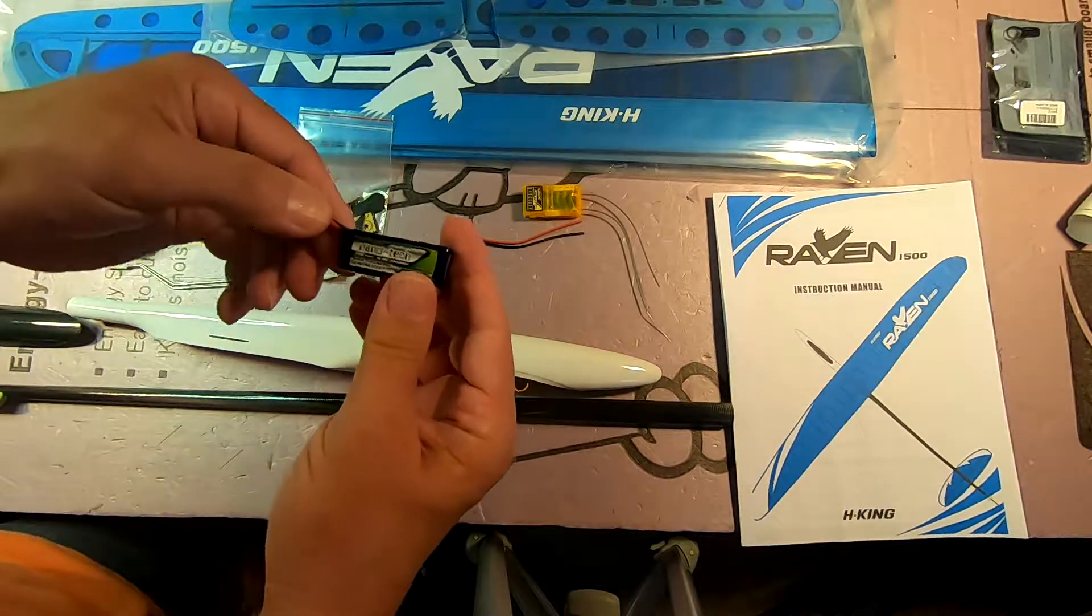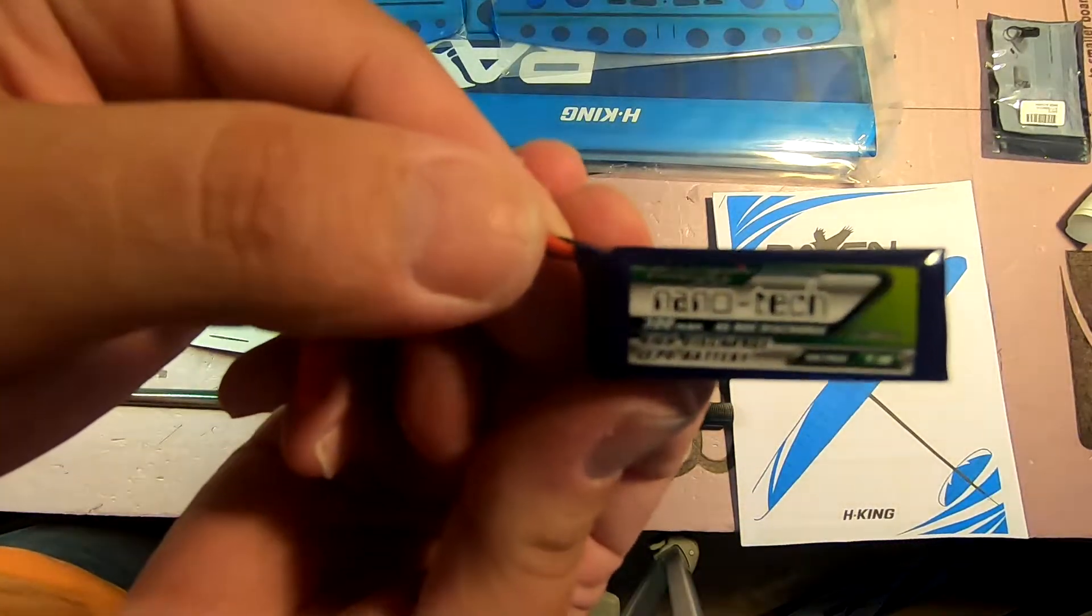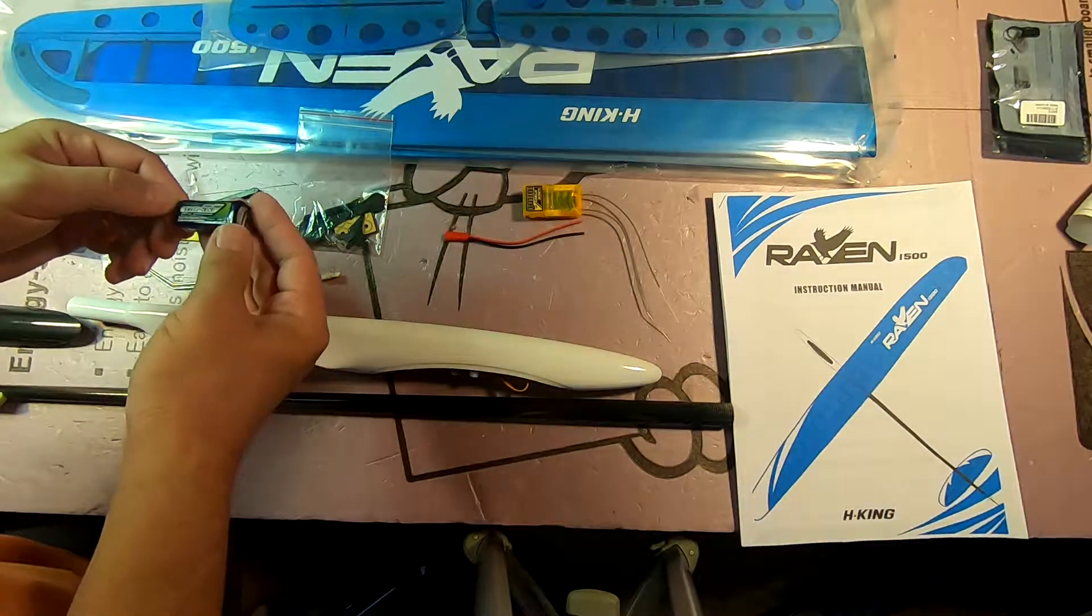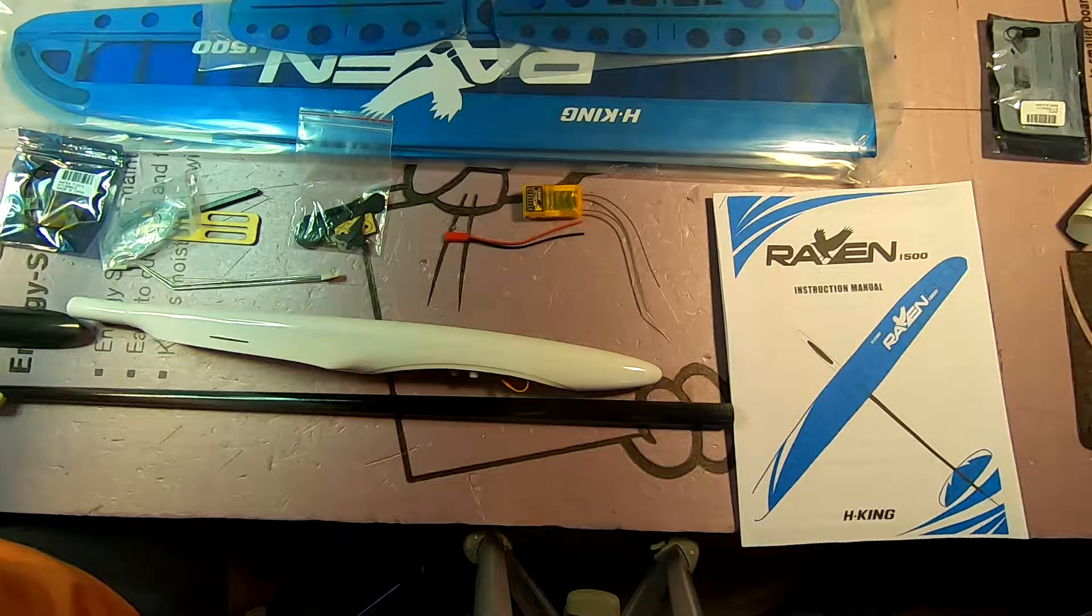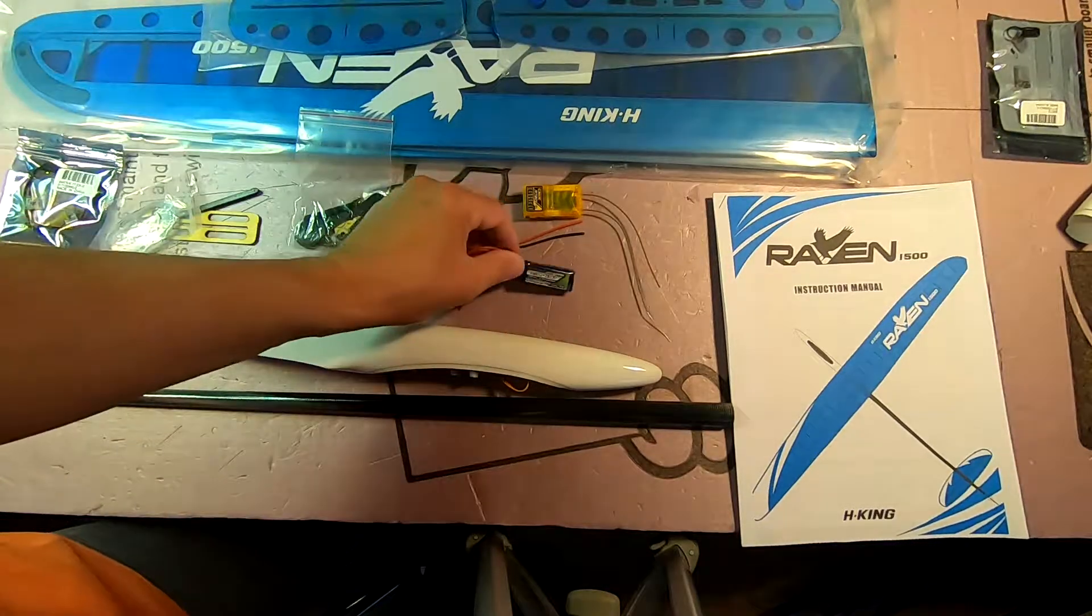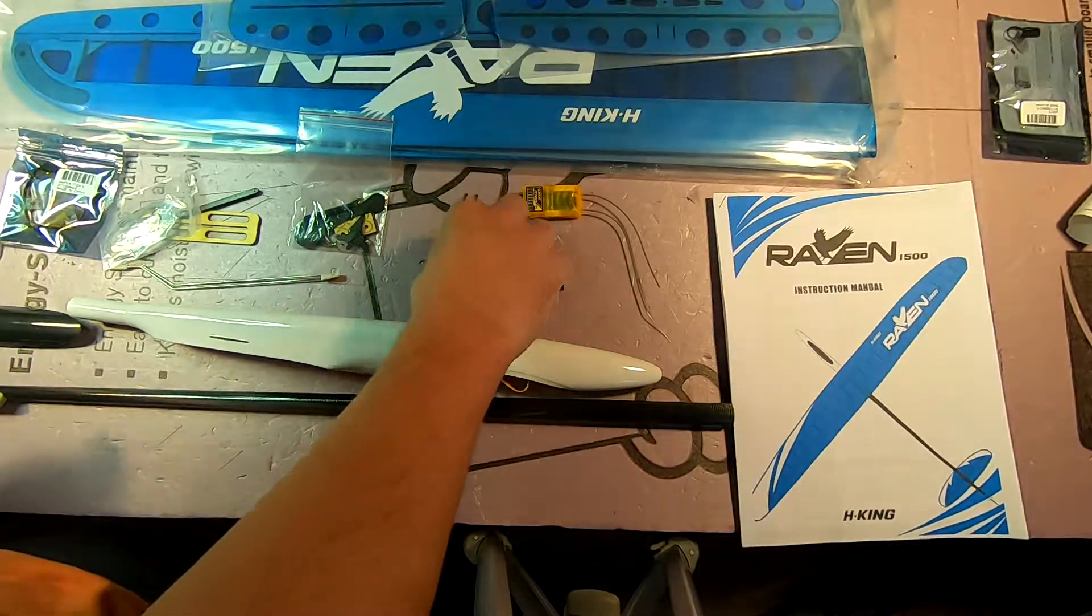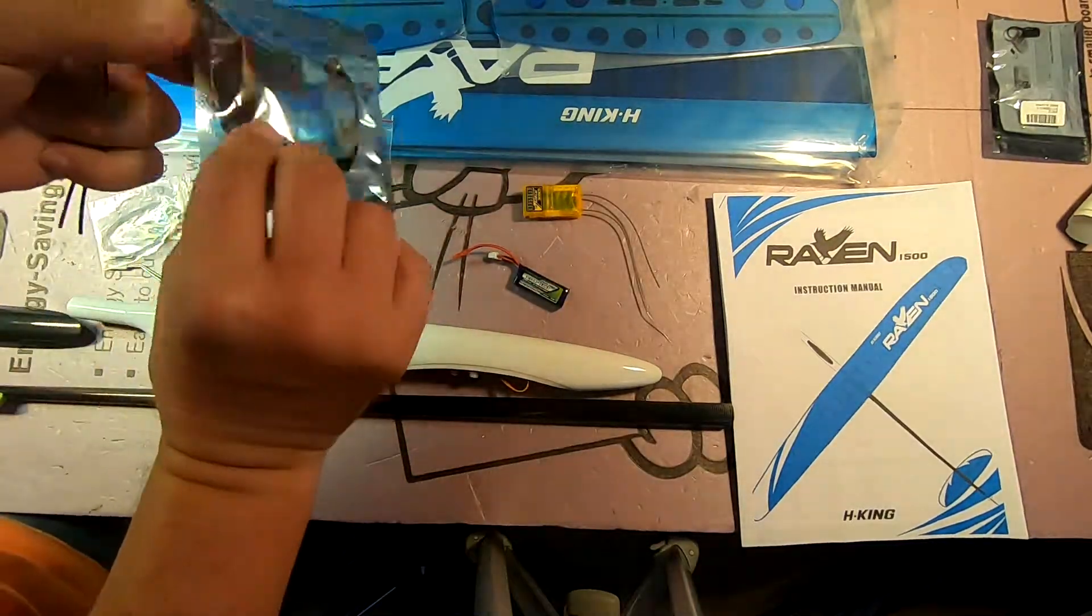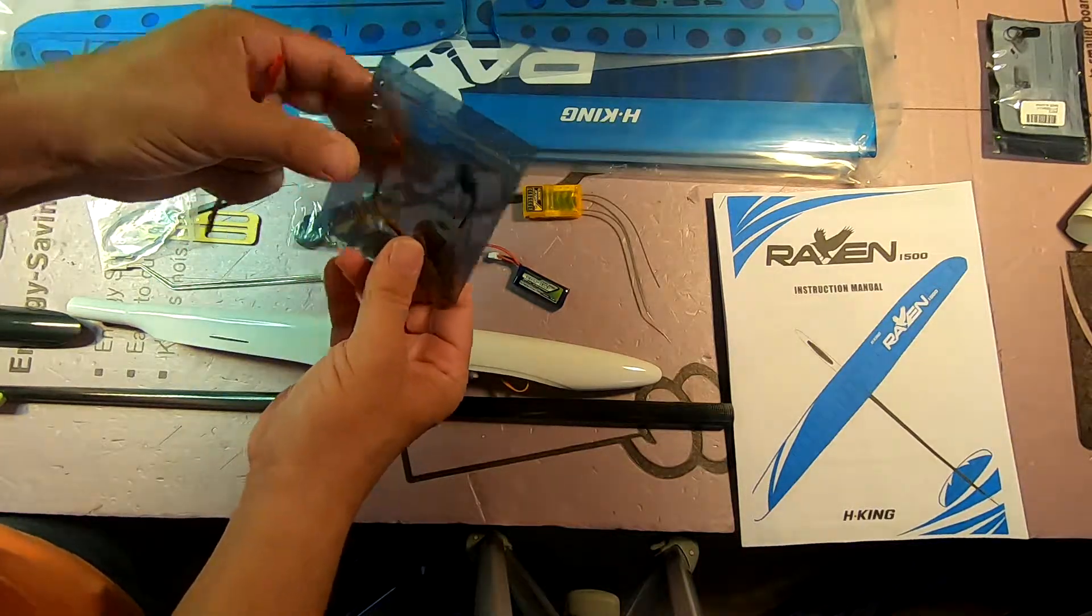This is the LiPo I decided to go with. Let me get this in nice and close for you. It's very small. It's a 7.4 volt, 300 milliamp, 45 to 90 C battery and it uses a JST connector, which is what the BEC uses, battery elimination circuit.